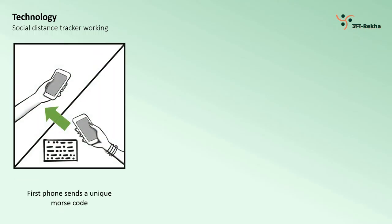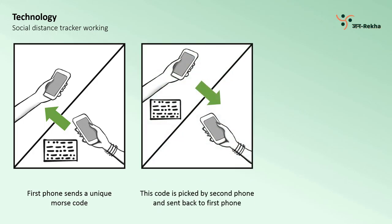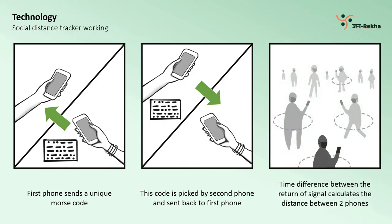So, how does this work? Phone 1 sends a unique code in the form of a Morse code. This code is heard by the second phone and is relayed back to the first phone. The time difference between the return of the sound is calculated by the first device to find out the distance between the two phones. This creates a bubble around the user. The bubble can be 6 feet in diameter. If this bubble is breached, an alarm rings. No data is uploaded to a server for processing, which maintains user anonymity.